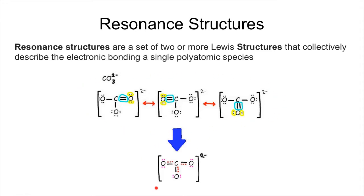This hybrid structure shown here on the bottom — you don't need to be able to do that. I just want you to be able to do all the possible resonance structures. So basically any time you have a choice on where to put a double bond, you have to show all of the possible choices and connect them with these double-sided arrows.